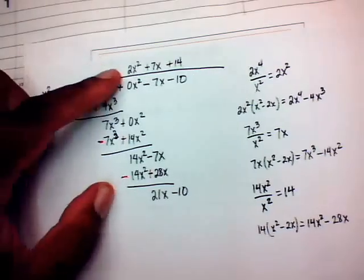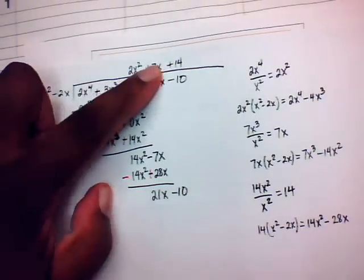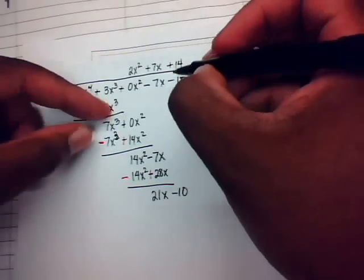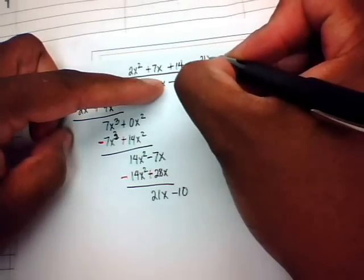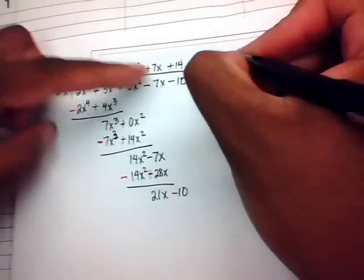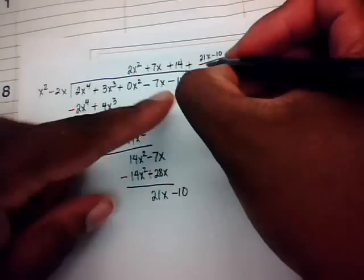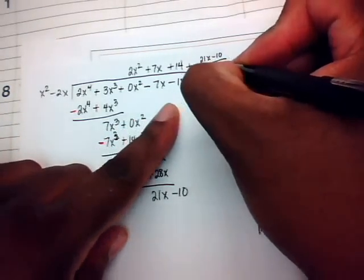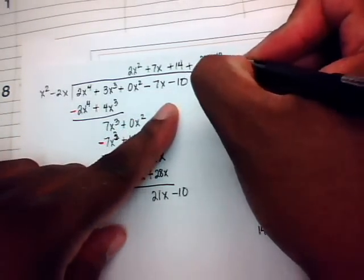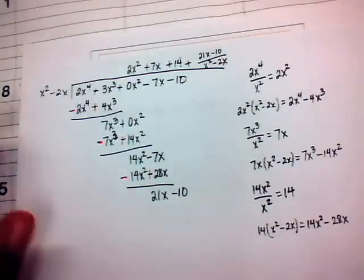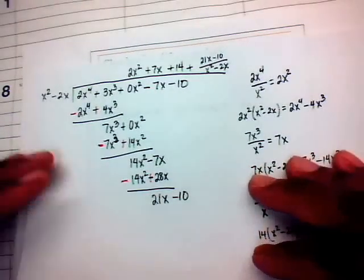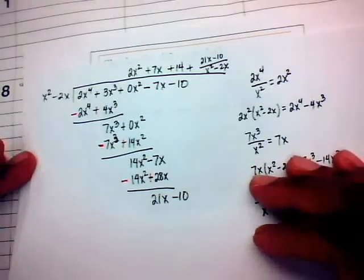The quotient and remainder together are 2x squared plus 7x plus 14, plus the remainder 21x minus 10 over the divisor x squared minus 2x. That's how we use long division to divide polynomials.